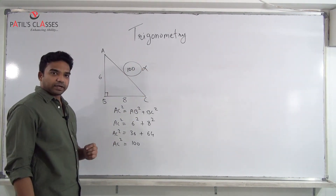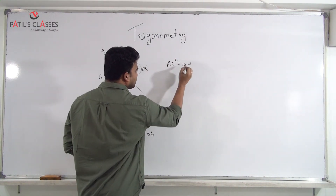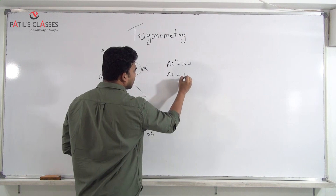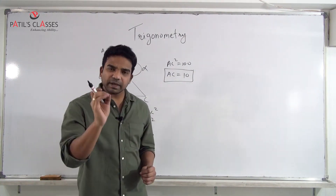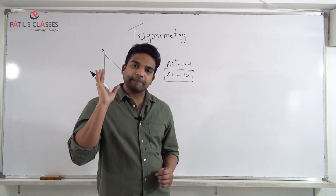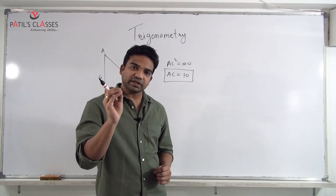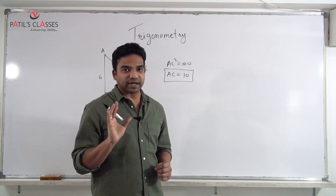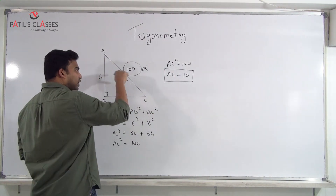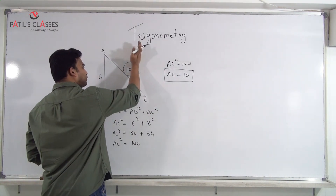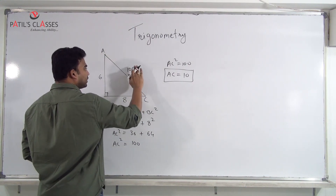If AC² = 100, then AC = 10. So 100 is the wrong answer for AC; the correct answer is 10. I am starting with very basic concepts so that every person watching this video will be able to understand.